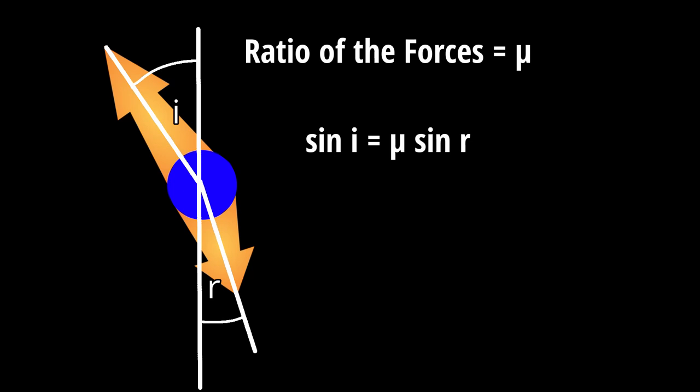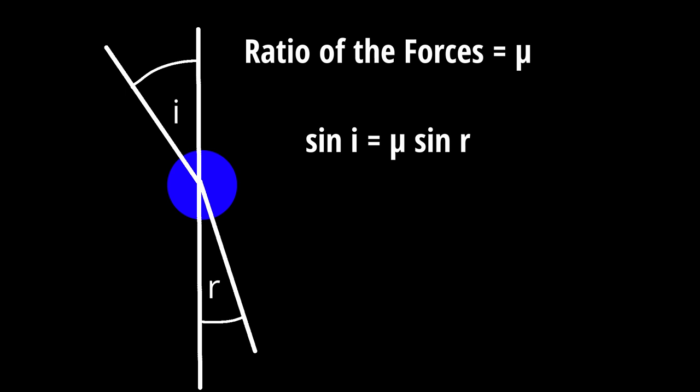If two opposing forces whose ratio is mu maintain in equilibrium a particle which is free to move only in a given plane, it follows from the triangle of forces that the direction of forces must obey the relationship sin i equals mu sin r. This is the same equation as that which expresses the law of refraction. The elder Bernoulli conjectured that a theory of light might be based on this but was never able to give any satisfactory explanation for the existence of the forces.